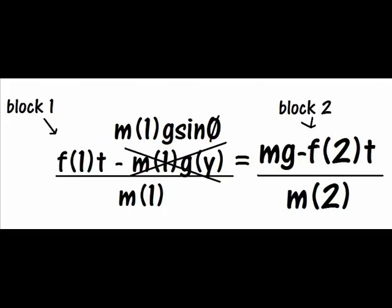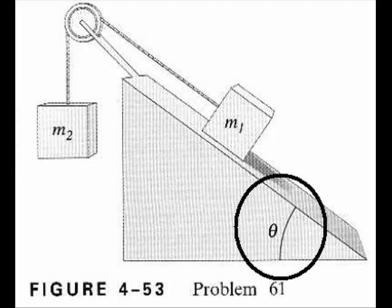Now, to put the equation in terms of both the masses, theta and g, set the two equations equal to each other. This can be done because acceleration is the same because they both are hanging from the same string. The tensions cancel and the masses and forces of gravity combine to create the formula of acceleration in terms of M1, M2, theta, and g.